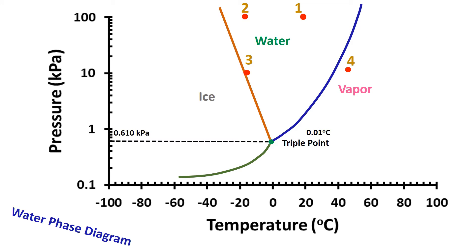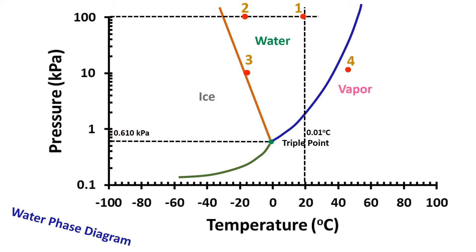We could consider scenario one. The sample is at atmospheric conditions, that is 20°C and one atmosphere which is 100 kilopascal — located at point 0.1 in the phase diagram. We want to operate drying at 10 kilopascal and minus 10°C. First, we reduce the sample temperature to minus 10°C while at atmospheric pressure — this is point 0.2. Second, we reduce the pressure to 10 kilopascal — point 0.3. Now we start heating to 50°C for drying — point 0.4. From the phase diagram, we can clearly observe that this drying process is vacuum drying, not freeze drying, since there is no sublimation.